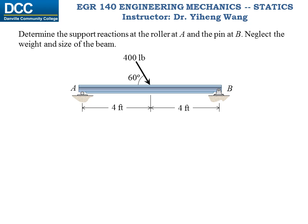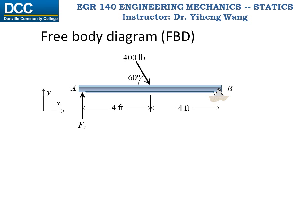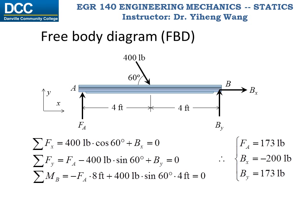Here's another example. We need to determine the support reactions at the roller and the pin. A roller is similar to a rocker or simple contact support, and it exerts a force perpendicular to the contacting surface. A pin support allows rotation but prevents motion in both the horizontal and vertical directions. Therefore, the support reactions are two forces along those two directions. We can assume their directions on the free body diagram and write the three equilibrium equations to solve for them. Note that a negative force result indicates the actual direction is opposite to what was originally assumed.